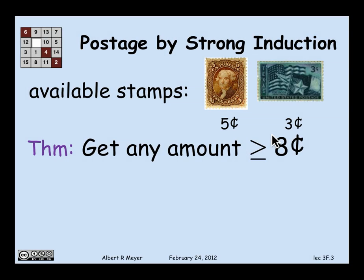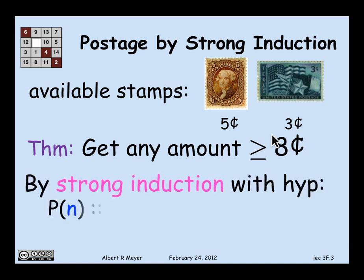All right. As an application of it, let's prove something that we've already proved by well-ordering. In fact, strong induction and well-ordering are closely related, as we'll also discuss later. So let's prove that using 3 and 5 cent stamps that you can get any amount of postage greater than or equal to 8 cents. And I'm going to prove this by strong induction with the induction hypothesis, P(n), that says I can form n+8 cents. Clearly, if I can prove for all n, P(n), then I've proved that I can get every amount greater than or equal to 8 cents.